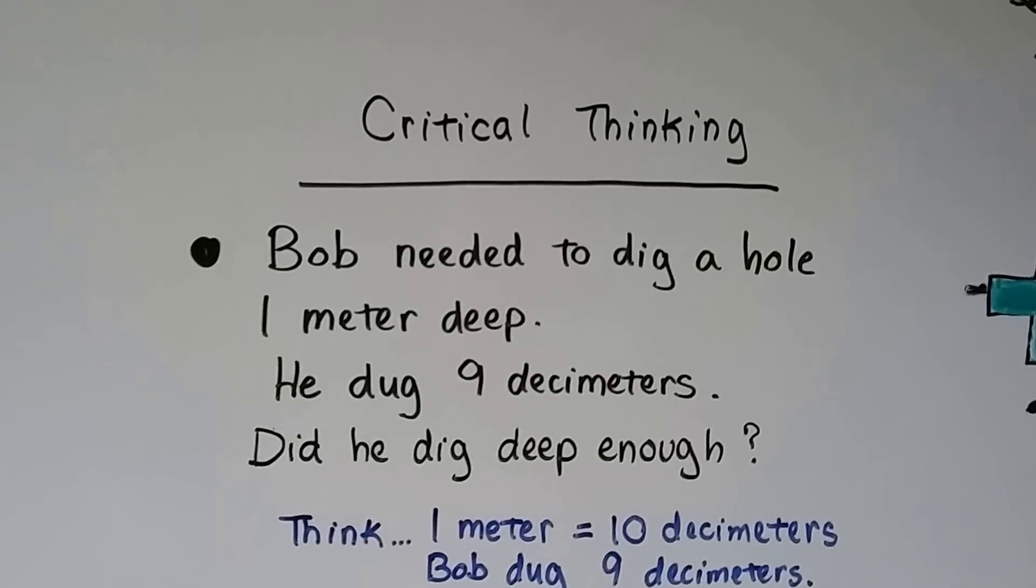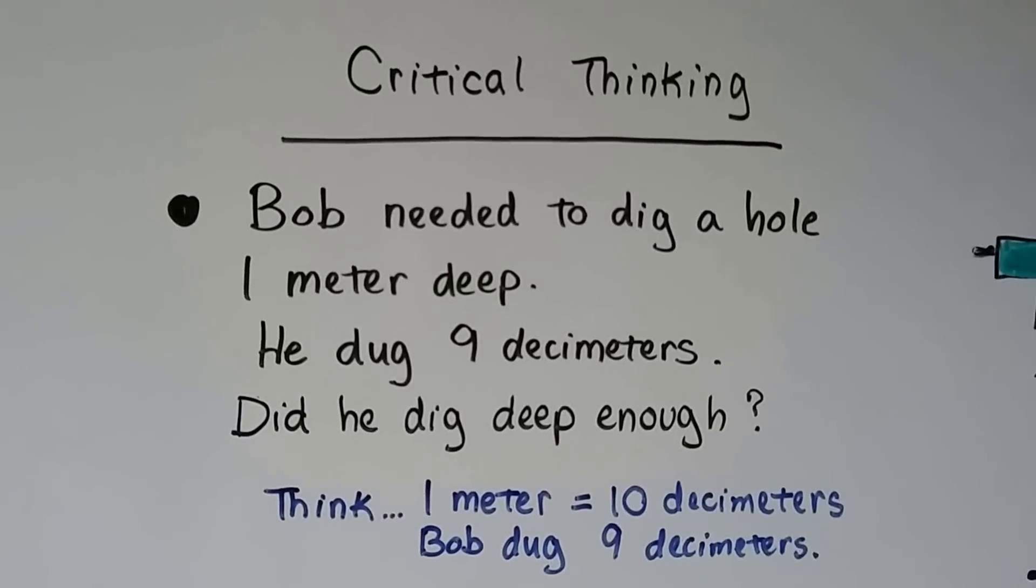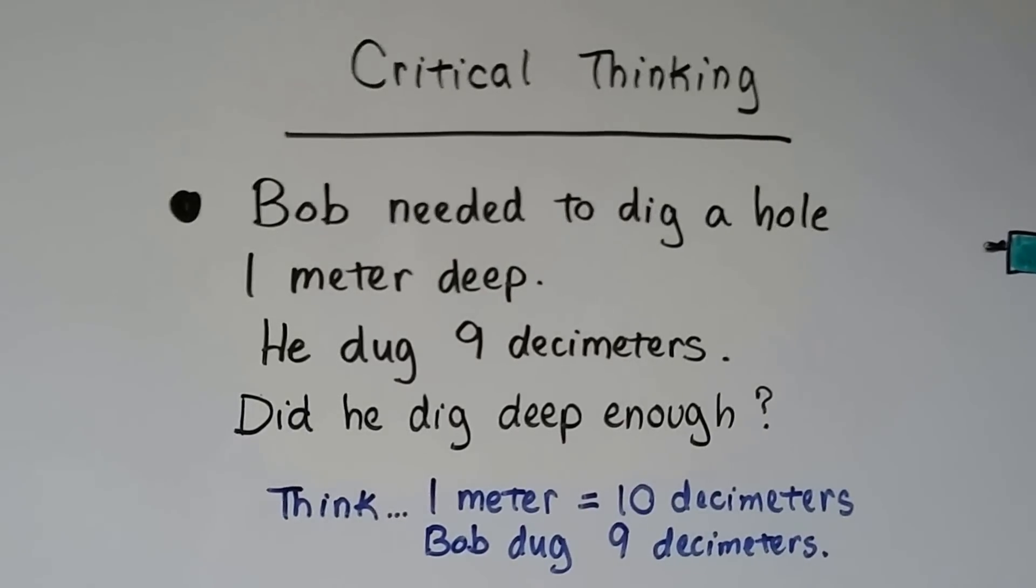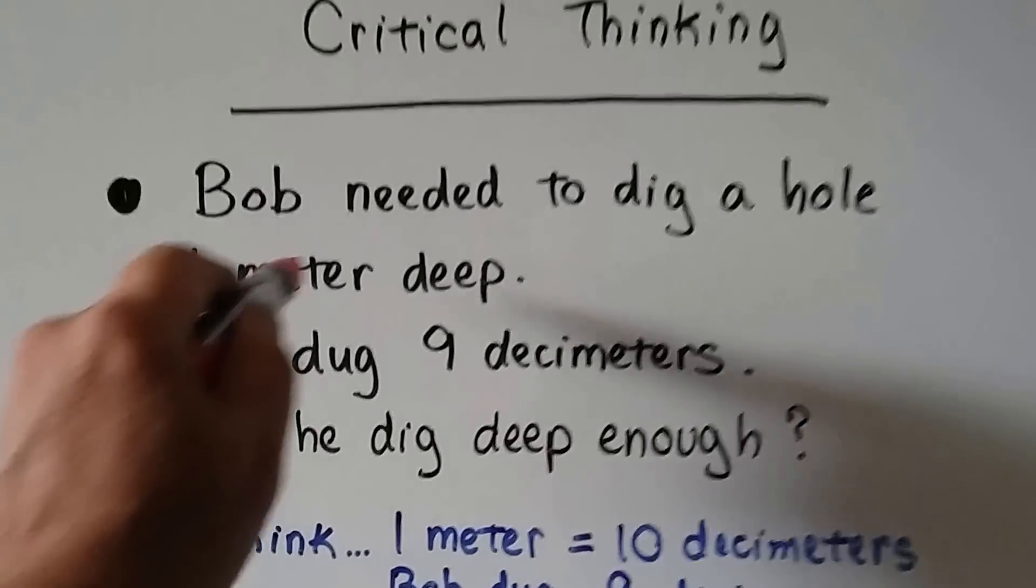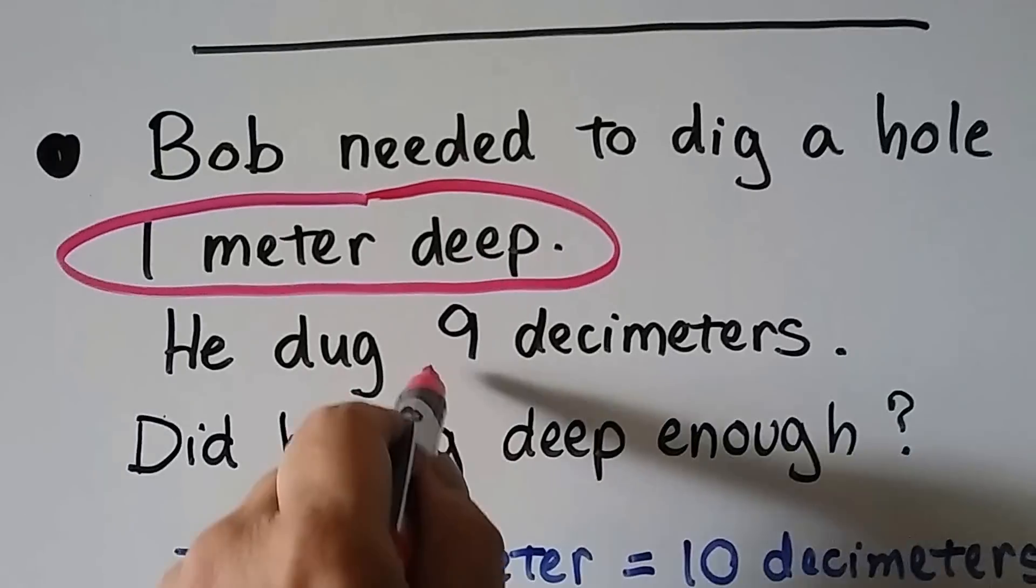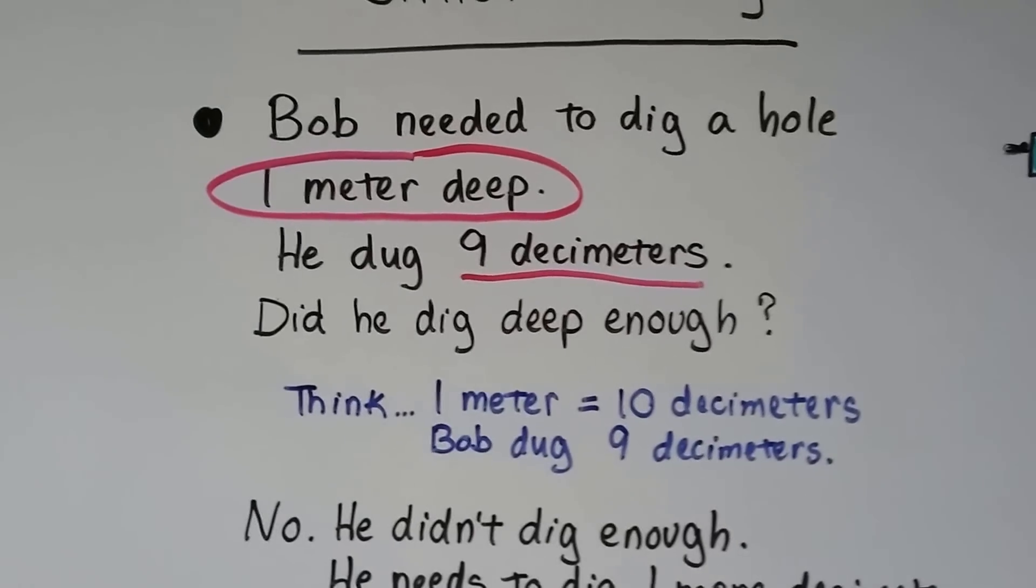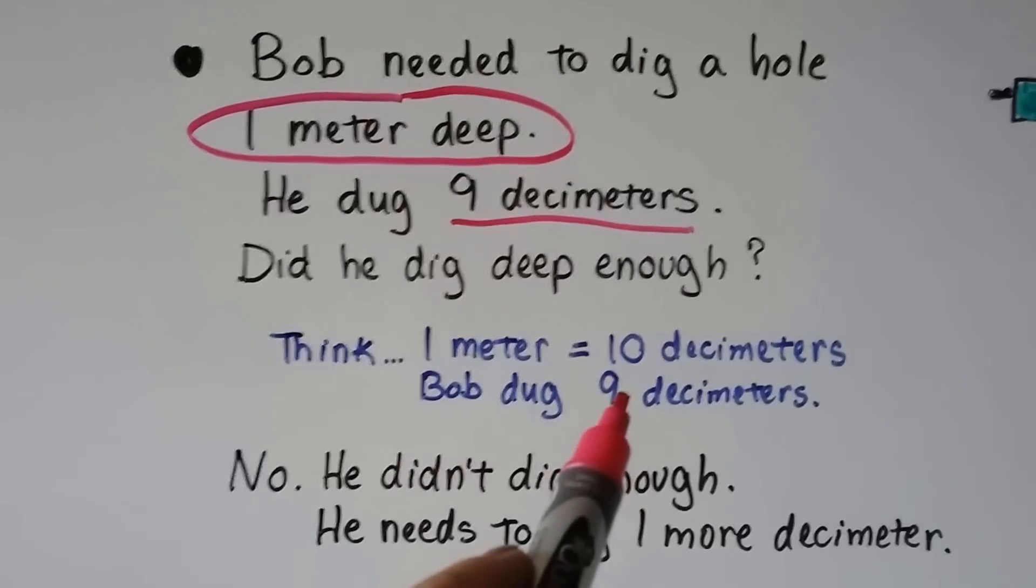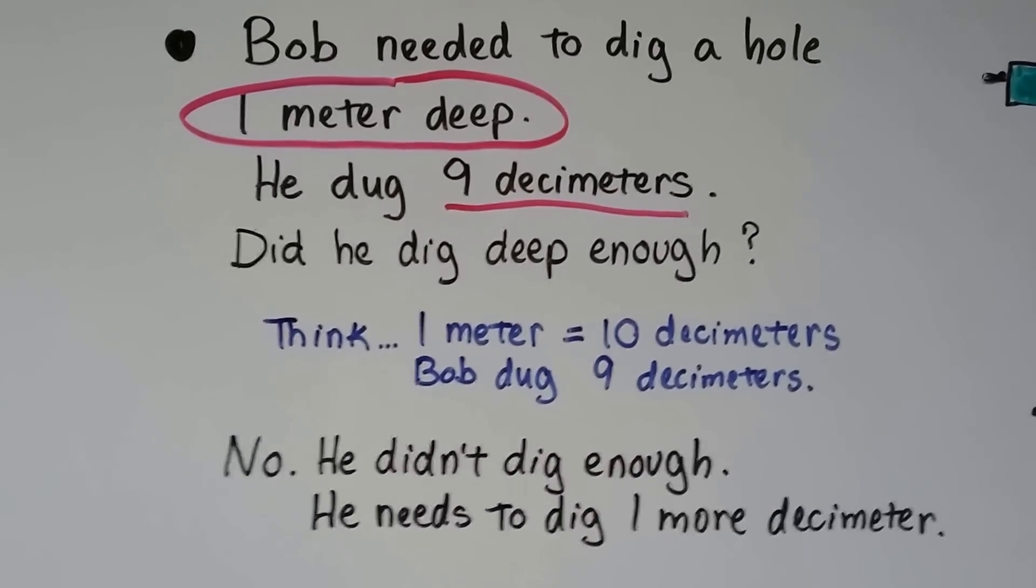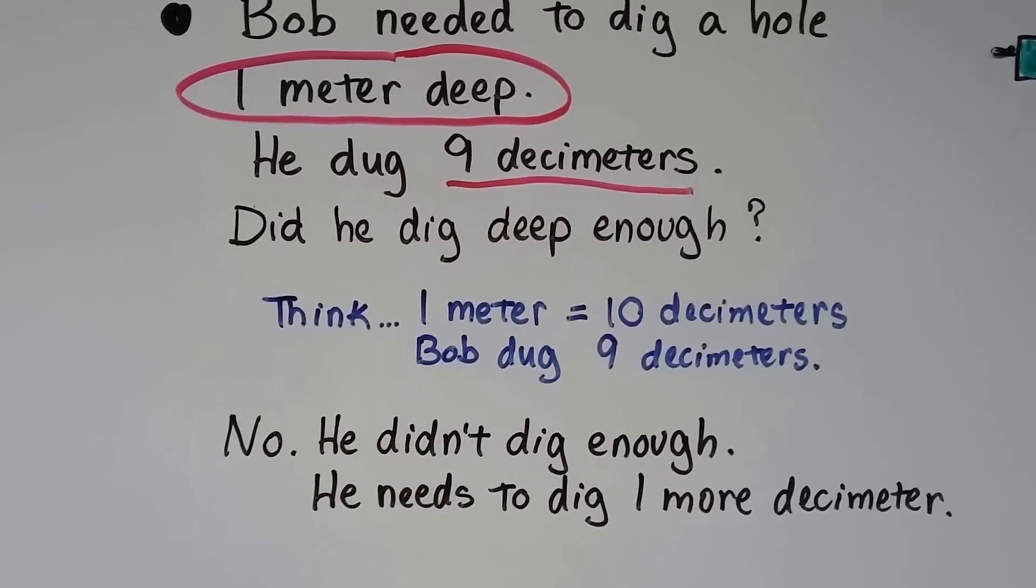Let's try some critical thinking. Bob needed to dig a hole one meter deep. He dug nine decimeters. Did he dig deep enough? We've got to think here. He needs to dig it one meter deep and he dug nine decimeters. We think, okay, one meter is equal to 10 decimeters. It says he dug nine decimeters. So no, he didn't dig enough. He needs to dig one more decimeter in order for it to be 10.